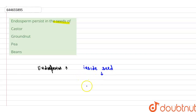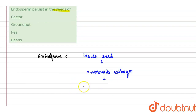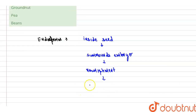Inside the seed, it surrounds the embryo and provides nourishment to the embryo in the form of starch. It also contains oil and protein.